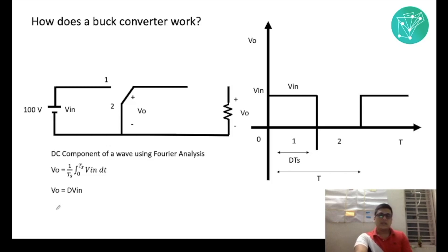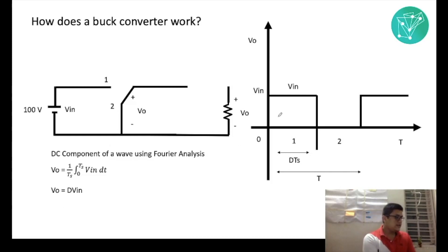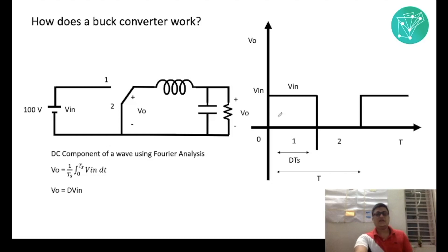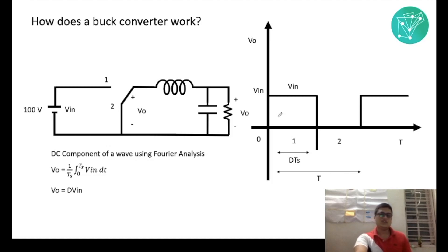Why do we need a capacitor or an inductor in the circuit? It is not ideal to have switched voltages at the output. For this reason, you have a capacitor and inductor connected in the circuit, where the cutoff frequency is lower than the switching frequency. That is a brief explanation of how a buck converter actually works.